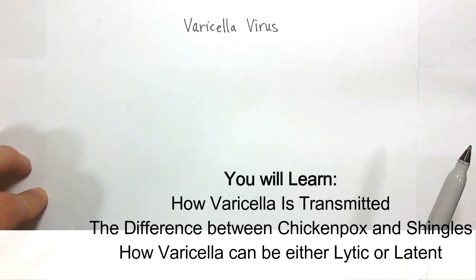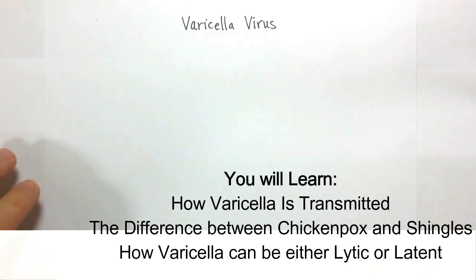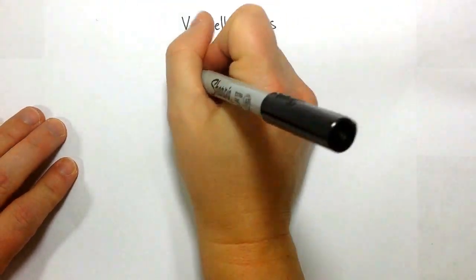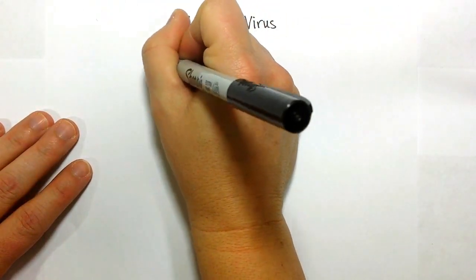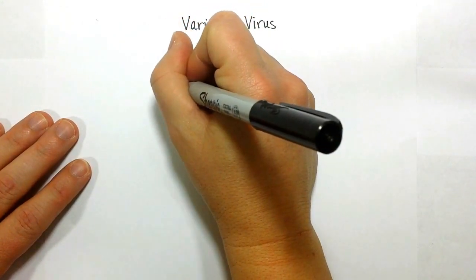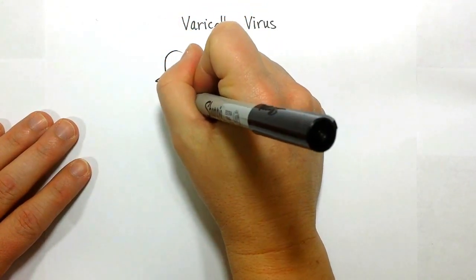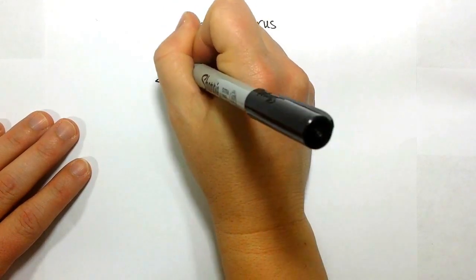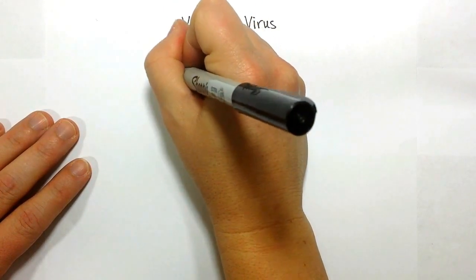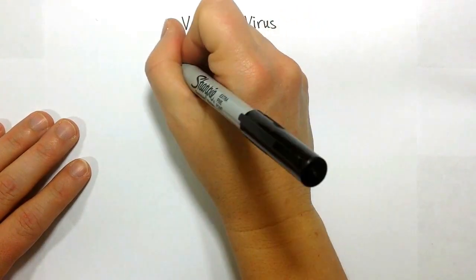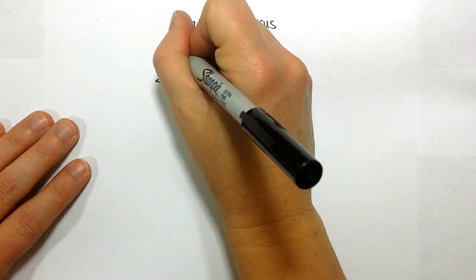We'll walk through the steps that cause the symptoms of chicken pox in this video. First, you're going to draw a picture of a guy's head. You can do this — everybody can do a little bit of drawing, right? Give him an ear, give him an eye, and maybe a few hairs.